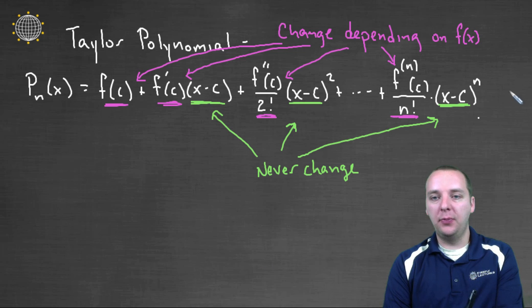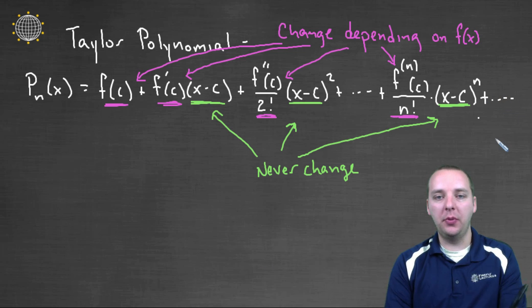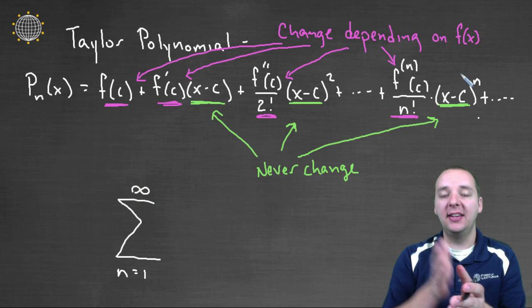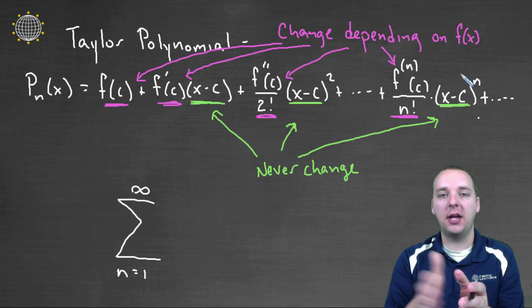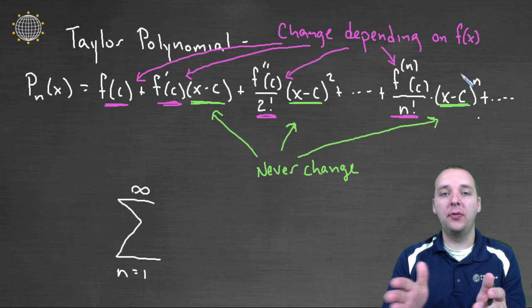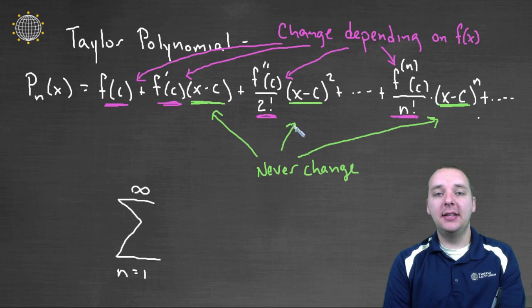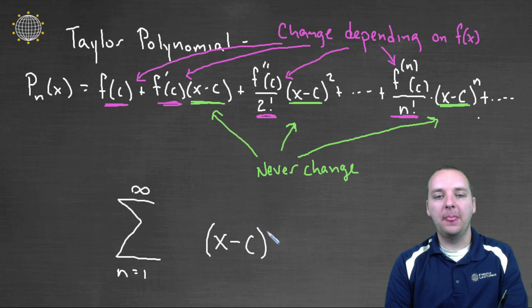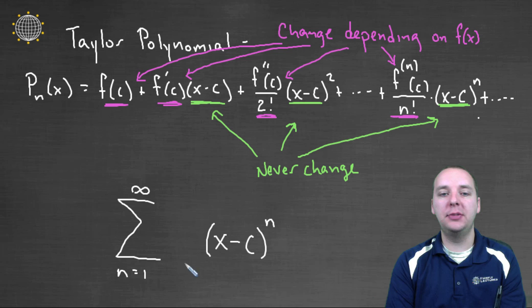All right, so if we in addition kept this going on forever, what we would have is we would have a series, a series going from n equals 1 to infinity, because we're not going to stop at 10, or stop at 12, or stop at 100. We're going to keep going on forever. The things that will not change is you'll always have an x minus c to the nth power, right? x minus c to a power that's changing depending on your index.